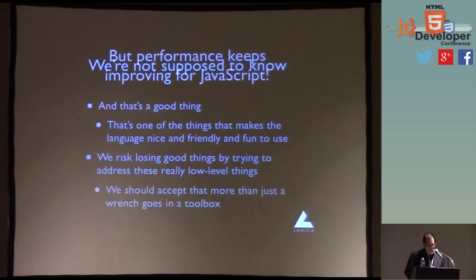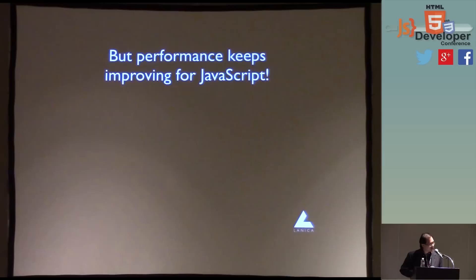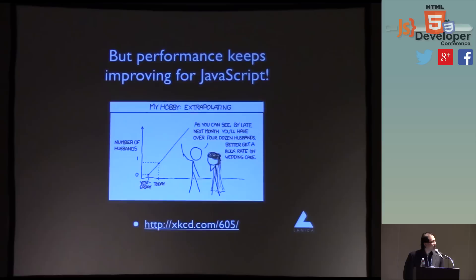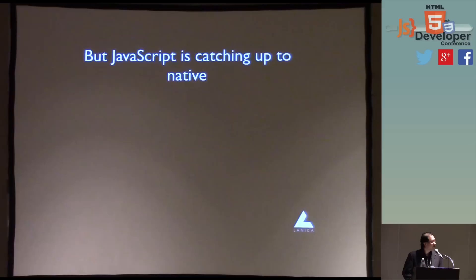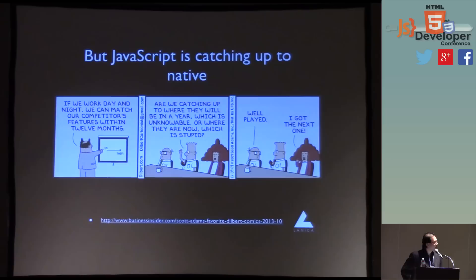I feel compelled to address the idea that things are improving and at some point we won't have to deal with native — we can do everything in JavaScript. So performance keeps improving. To answer whether JavaScript is catching up to native: are we catching up to where native will be in a year, which is unknowable, or where it is now, which is stupid? There was a very controversial article over the summer — on Hacker News, Slashdot, Reddit — about why mobile apps are slow, with a lot of detail. With the Sunspider benchmark, from 2010 to 2013 it got faster in most cases, but not a lot faster. I think what this means is: the easy gains are done.